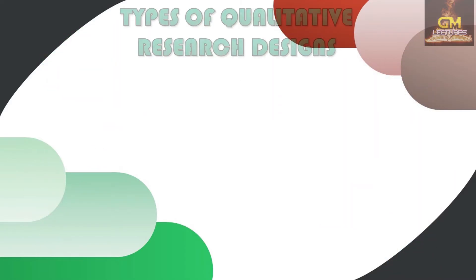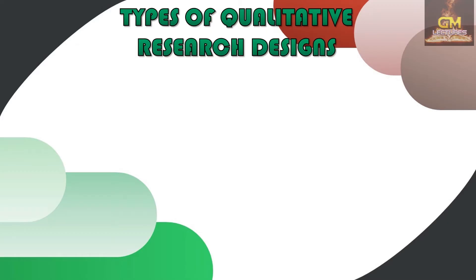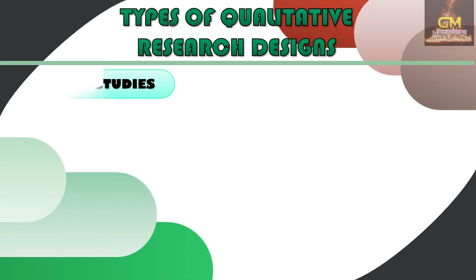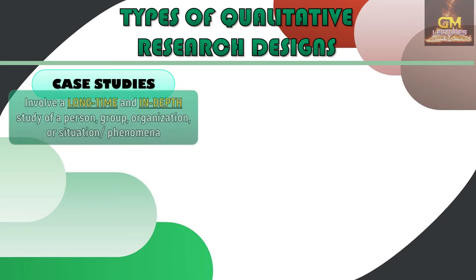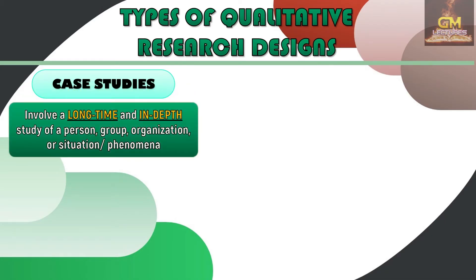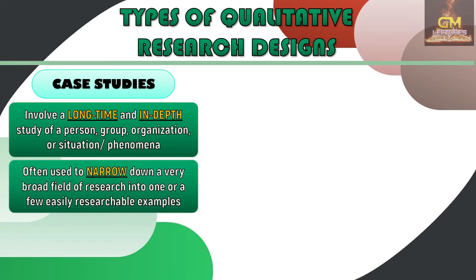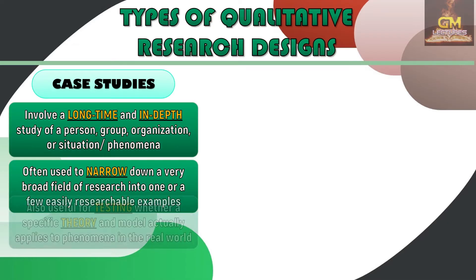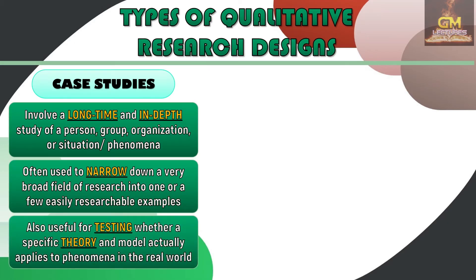We're going to talk about the different types of qualitative research designs, starting with case studies. Case studies involve a long-time and in-depth study of a person, group, organization, or situation or phenomenon. Case studies are often used to narrow down a very broad field of research into one or a few easily researchable examples. They are also useful for testing whether a specific theory and model actually applies to phenomena in the real world.